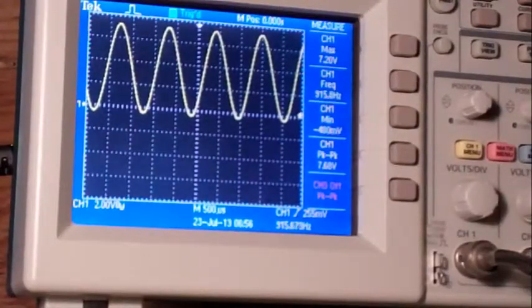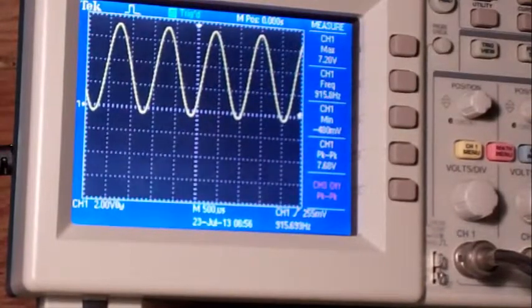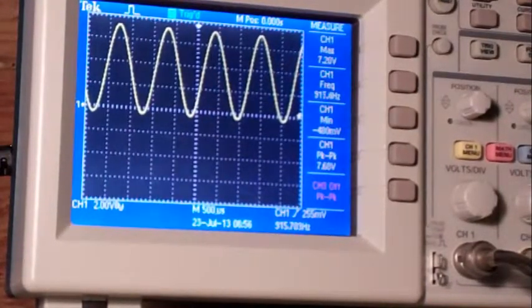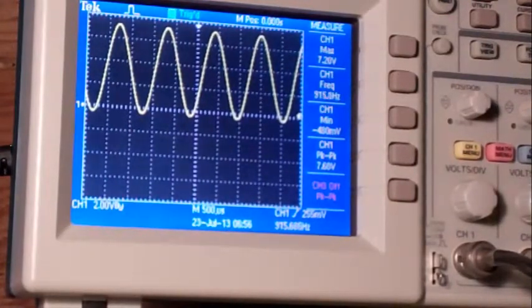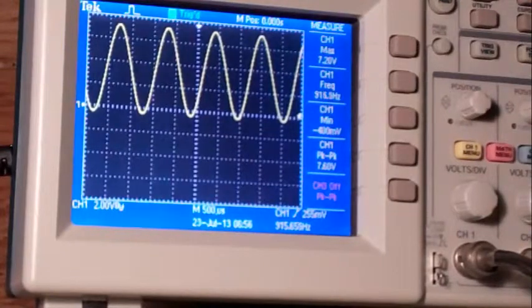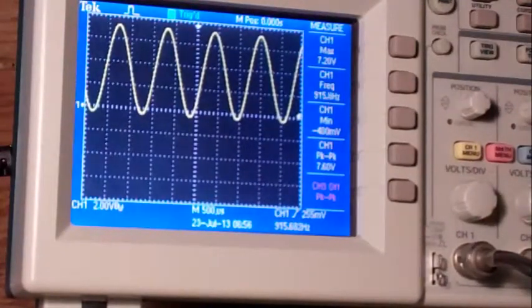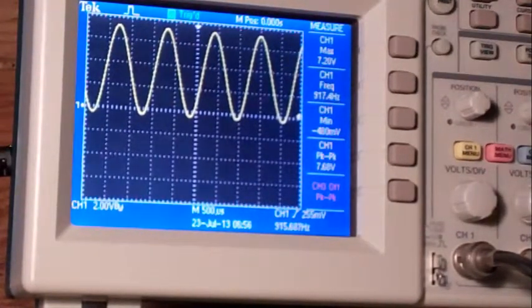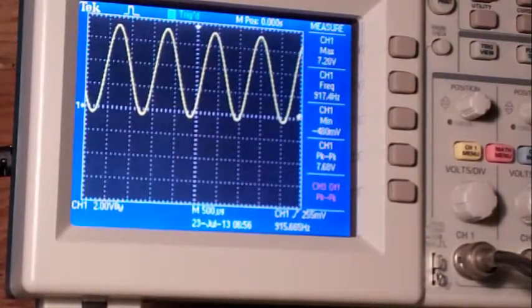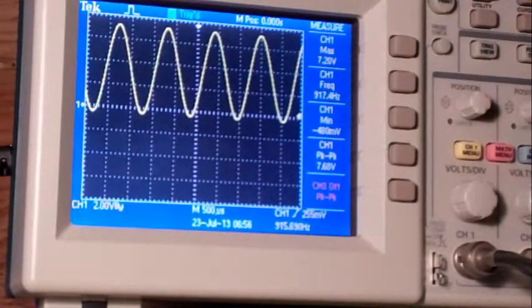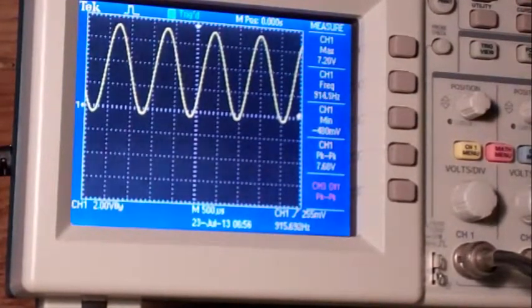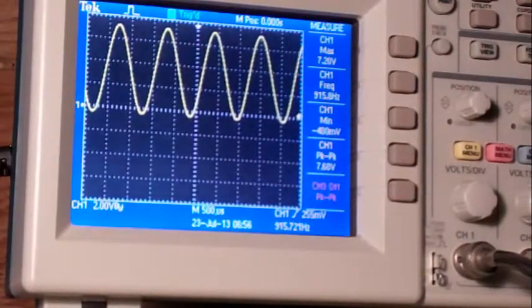Now measure the same signal with the Tektronix digital oscilloscope. Vmax is 7.2, frequency is 916 hertz, Vmin is negative 0.4 volts, and Vpeak-to-peak is 7.68 volts.